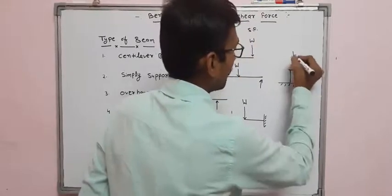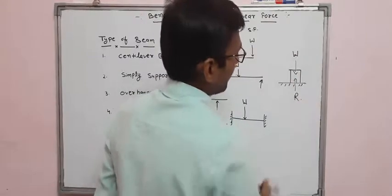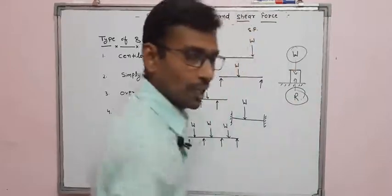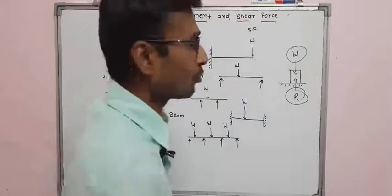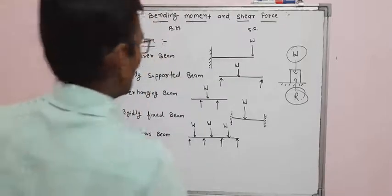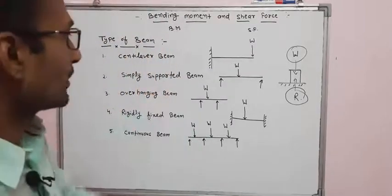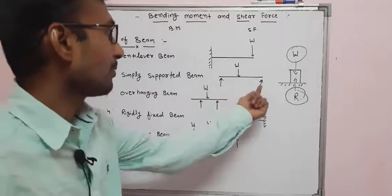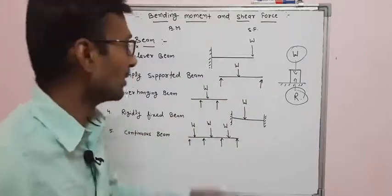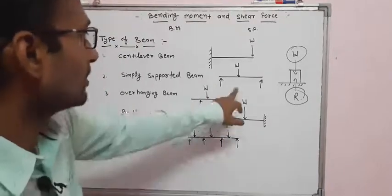W is in the downward direction, so the reaction will be in the upward direction. The reaction force acts opposite, according to Newton's law. In a simply supported beam, both sides have supports. If a load W is applied in the downward direction, this is the simply supported beam.